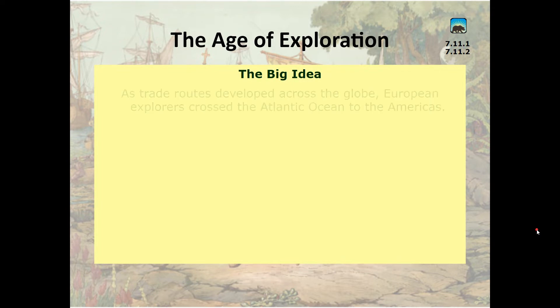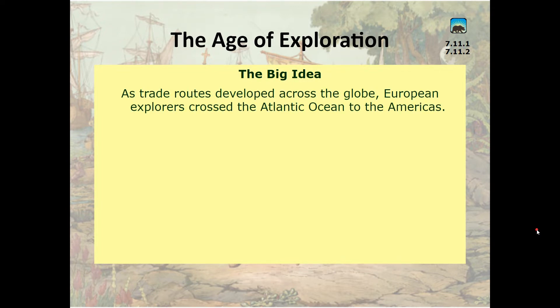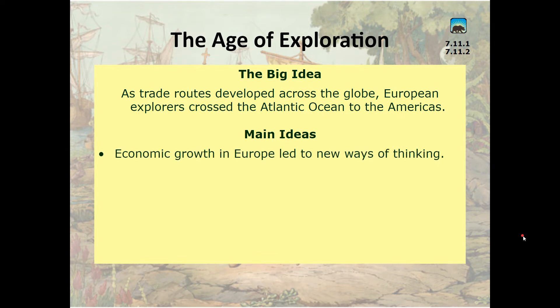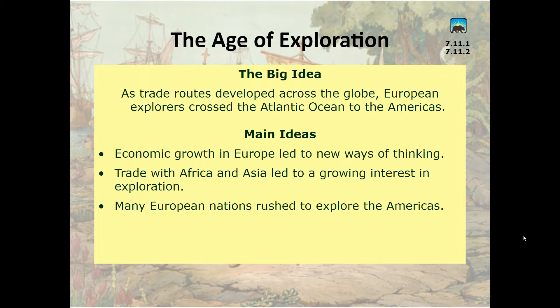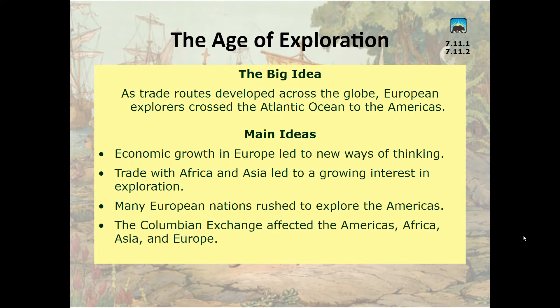The big idea for this lesson is that trade routes developed across the globe, leading European explorers across the Atlantic Ocean to the Americas. Main ideas: economic growth in Europe led to new ways of thinking; trade with Africa and Asia led to a growing interest in exploration; many European nations rushed to explore the Americas; and the Columbian exchange affected the Americas, Africa, Asia, and Europe.